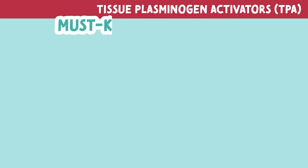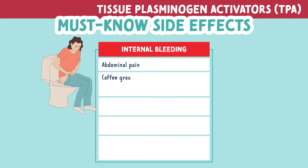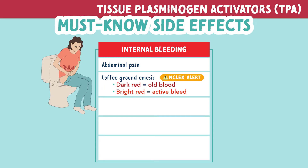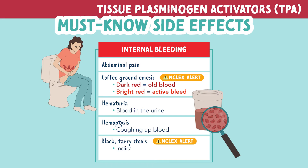Let's talk about the major side effects of TPAs. Since TPA breaks down fibrin, and fibrin helps form clots, patients will be at high risk for internal bleeding. Symptoms of internal bleeding include abdominal pain, coffee ground emesis (vomit that looks like coffee grounds, indicating prior bleeding), dark-colored stool indicating old blood in the intestinal tract, bright red blood indicating an active bleed, hematuria (blood in the urine), hemoptysis (coughing up blood), and black tarry stool — all indicating bleeding somewhere along the GI tract.